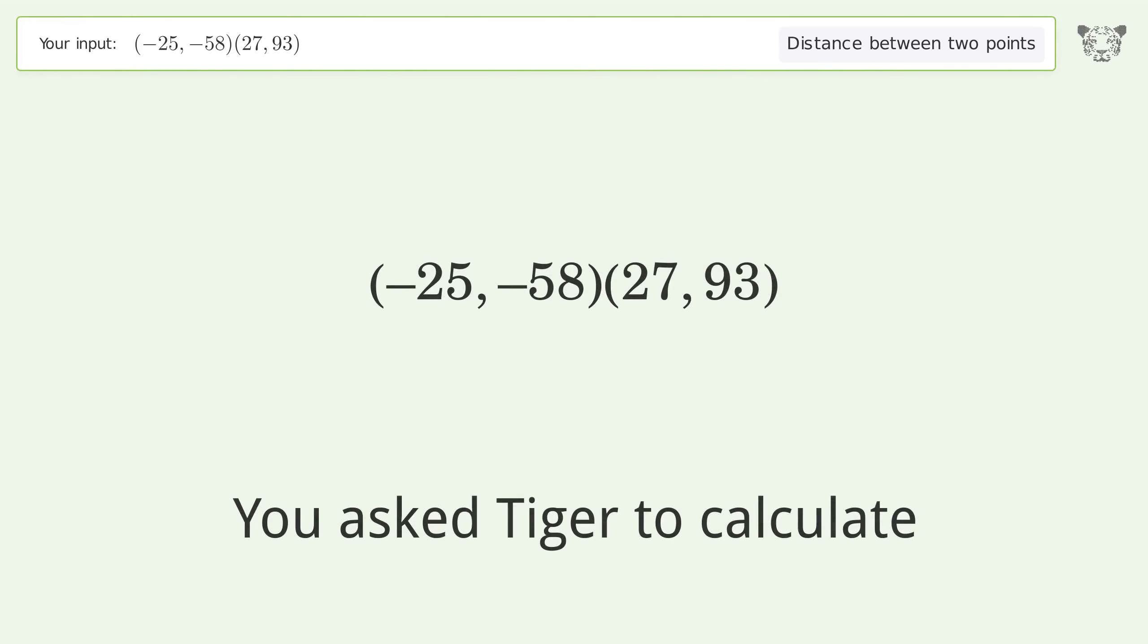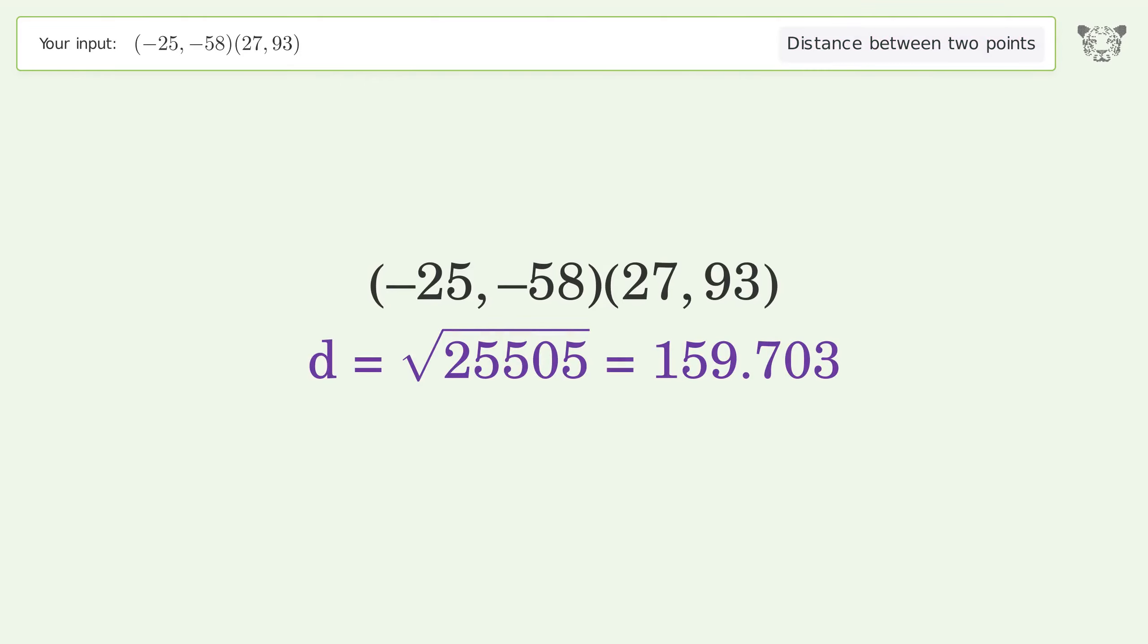You asked Tiger to calculate the distance between two points. The distance between the two points is the square root of 25505 or 159.703.